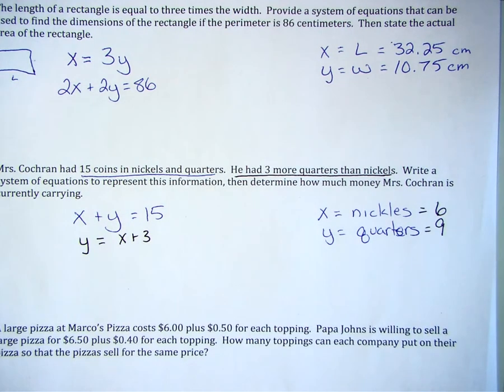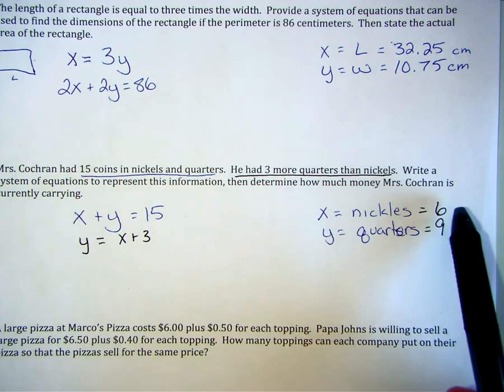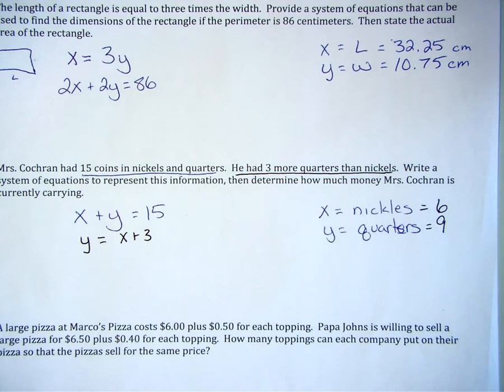But, we need to be really careful to answer the question. Write a system of equations to represent this information. Then, determine how much money Ms. Cochran is currently carrying. Right now, we've only determined a quantity of nickels and a quantity of quarters. We haven't determined a value based on the quantity of nickels.